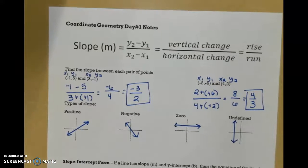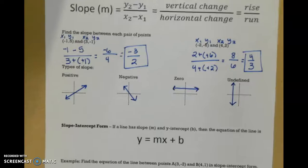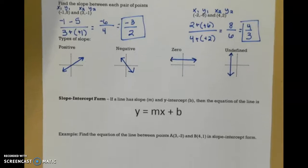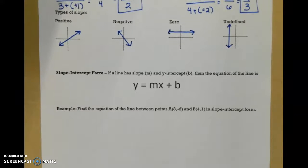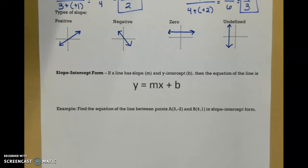Now that we're more familiar with slope, let's review writing some equations of lines. The first one we're going to talk about is called slope-intercept form. That form is y equals mx plus b, where m is our slope and b is our y-intercept. When we're solving these kinds of problems, we first want to find the slope, and then we use the slope and one of the points we're given to find the y-intercept.